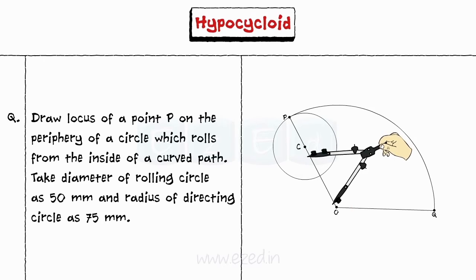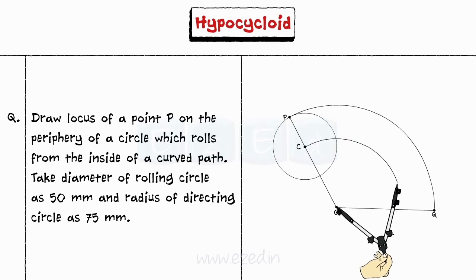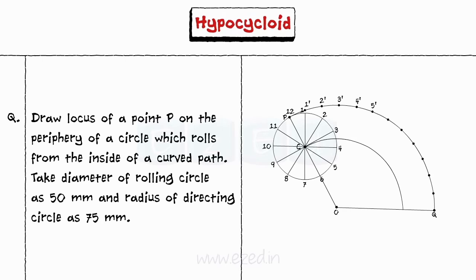Step 4: Draw an arc through point C. This line is called the locus of center C. Step 5: Now divide the circle into 12 equal parts and also divide arc PQ into 12 equal parts.